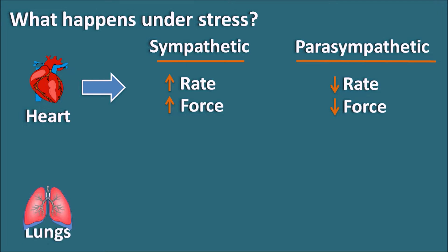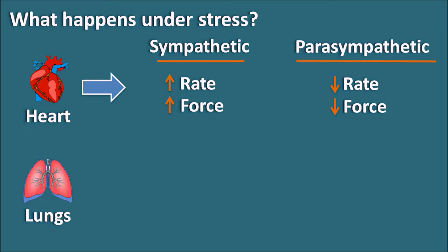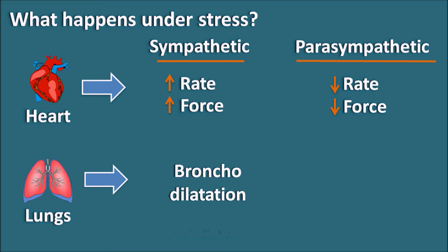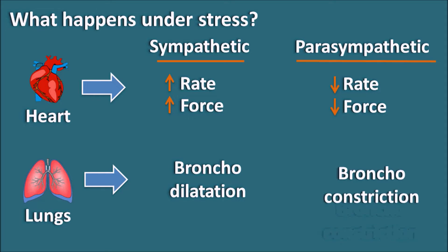The next organ is the lungs. Under stressful conditions we need more oxygen supply, so the sympathetic system acts on the lungs to produce bronchodilation. As the bronchioles are dilated, more oxygen is supplied to the cells. The opposite action is observed with the parasympathetic system, which produces bronchoconstriction.